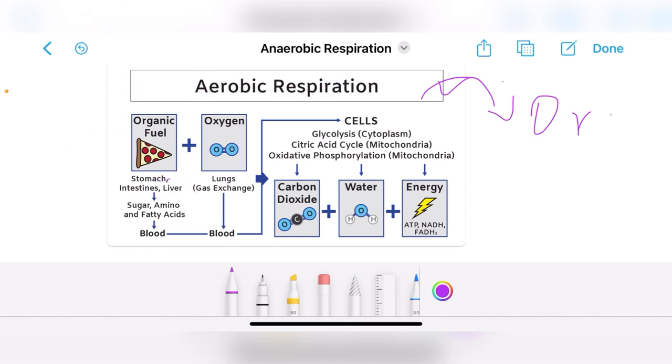Similarly, jo oxygen hum inhale karte hain, wo humare lungs ke level per ja kar blood mein enter ho jati hai. So now both food and oxygen enter blood. What will happen next?